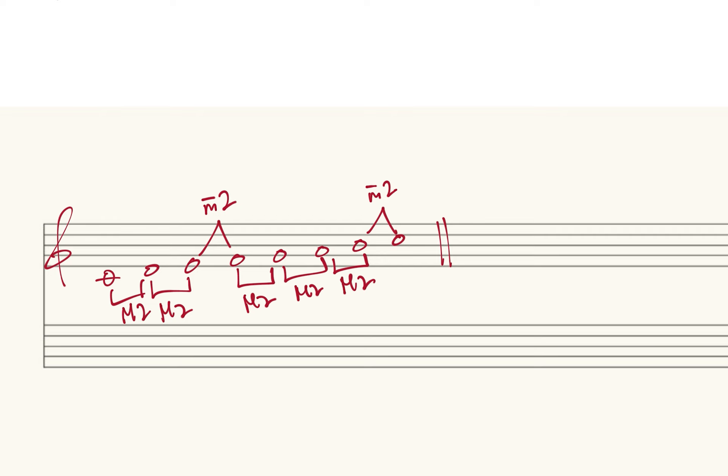The ascending C scale pattern is: major, major, minor, major, major, major, minor. Rather than saying that mouthful each time, we use one word to encapsulate this mode. That word is Ionian — a faster way of saying that pattern. These are ancient Greek place names inherited by modern Western music theory. So this pattern — major, major, minor, major, major, major, minor — is the Ionian mode.